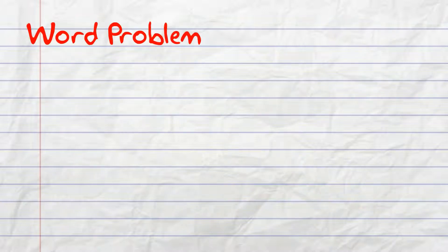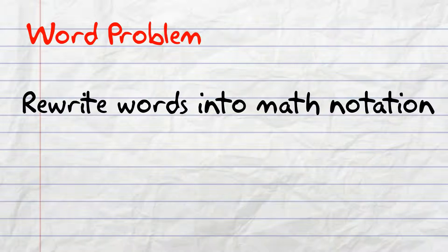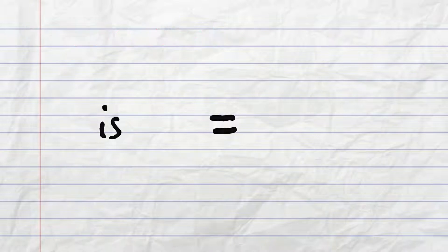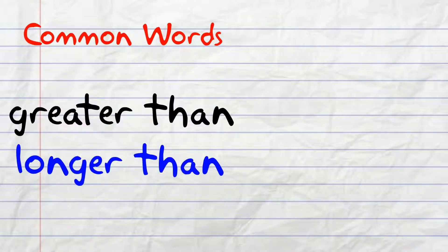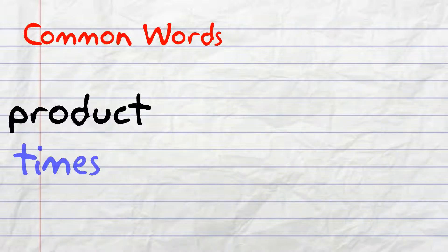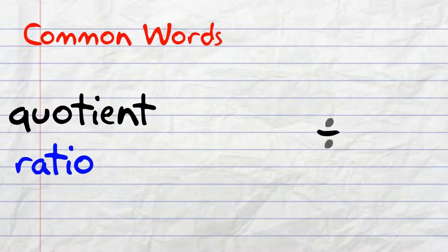As this is a word problem, we want to find certain words and rewrite them using math notation. Some of the most common words are the following: Is usually means equals. Greater than or longer than means addition. Less than or shorter than means subtraction. Product or times means multiplication. Quotient or ratio means division.